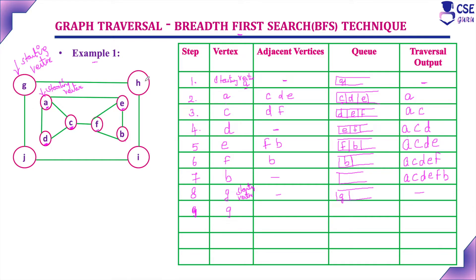We visit vertex G. Its adjacent vertices are H and J. In alphabetical order, H comes first, so we consider H and J. We insert H and J into the queue. G becomes part of the traversal output. The combined traversal output is now A, C, D, E, F, B, G.